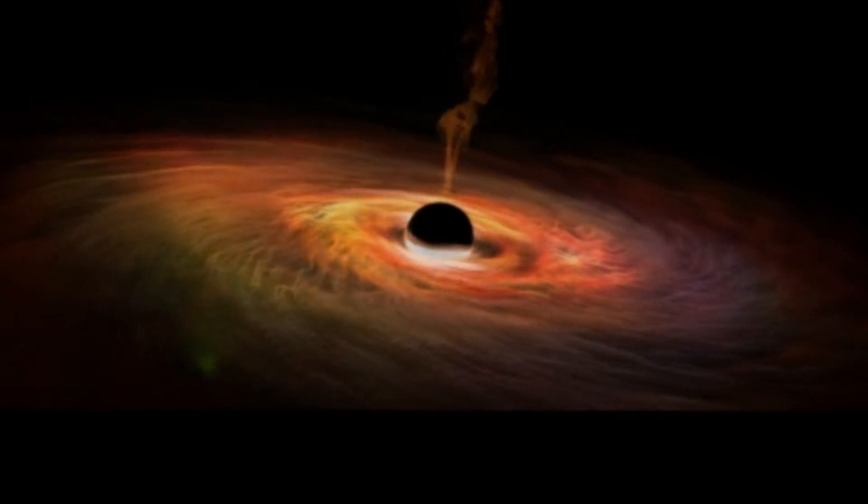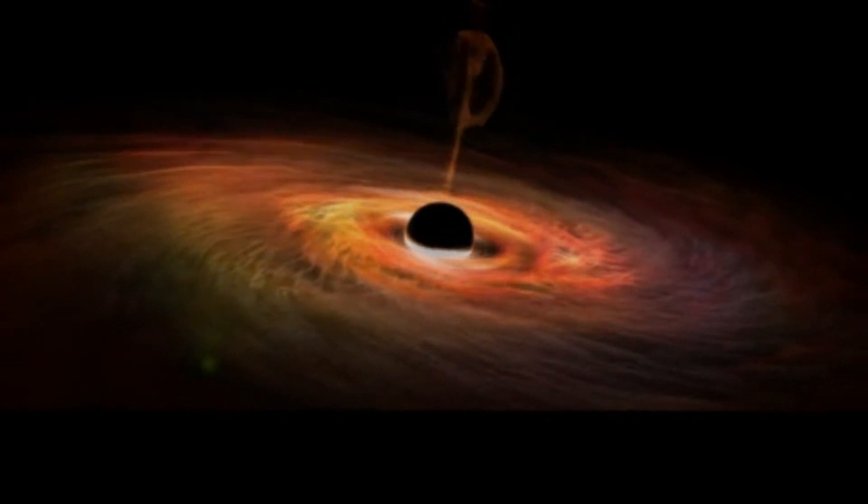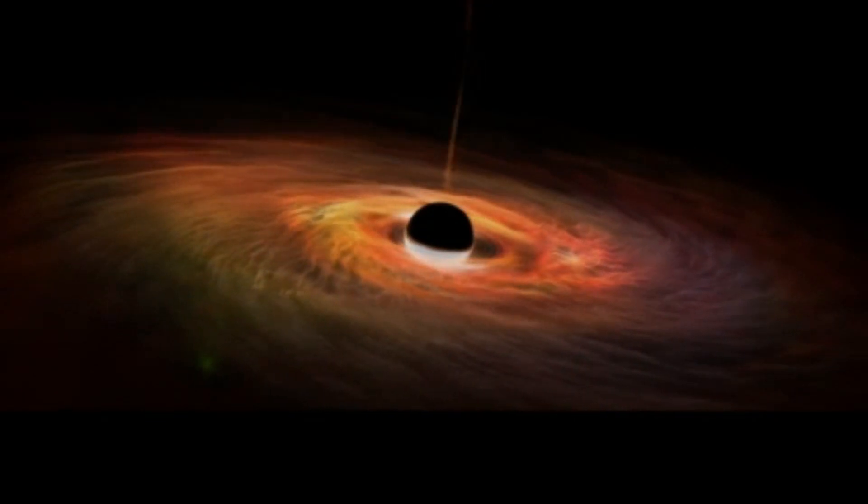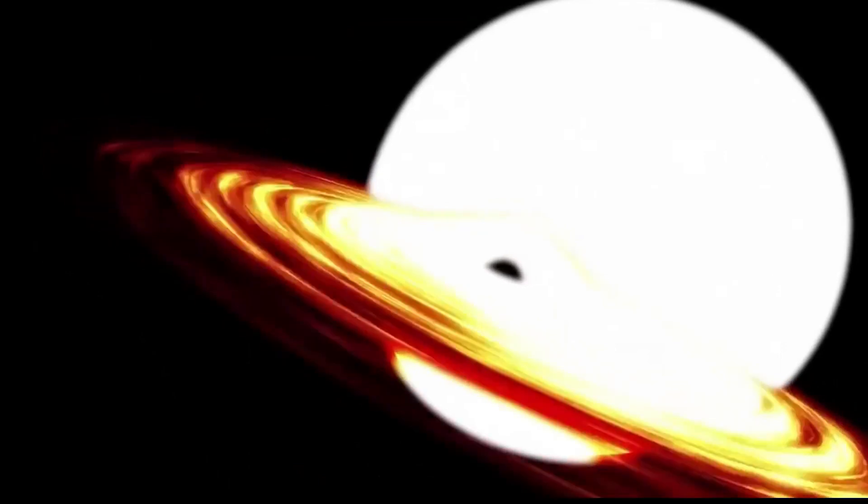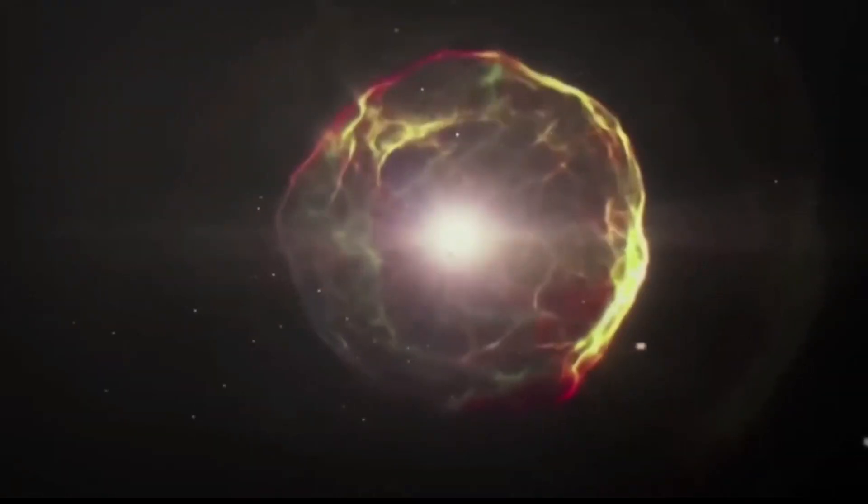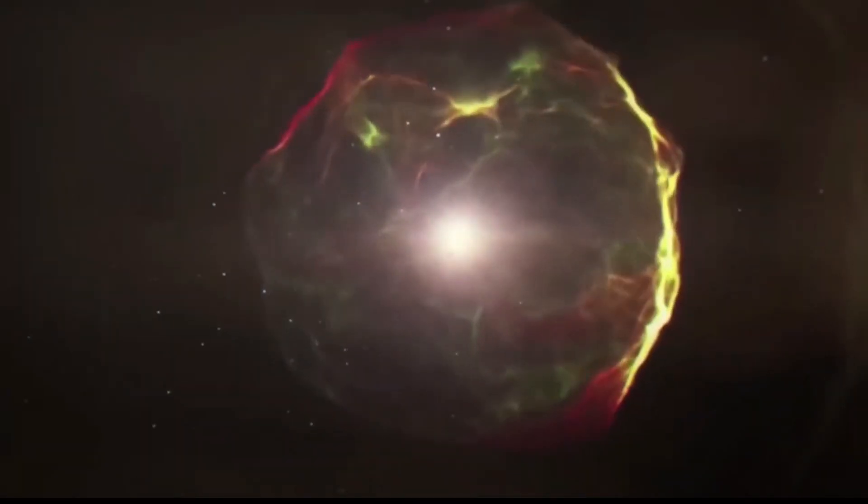We understand what happens outside the black hole as you approach its event horizon, that infamous point of no return. The event horizon is where the escape speed exceeds the speed of light. You'd have to be going faster than light, which is impossible for any bit of matter, to escape the black hole's gravity.